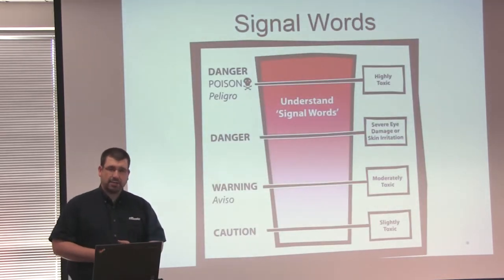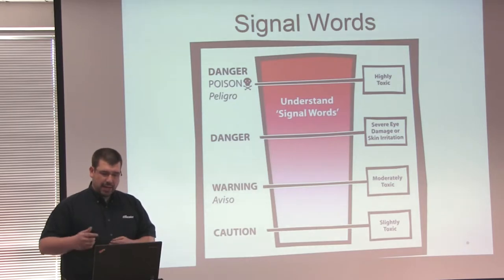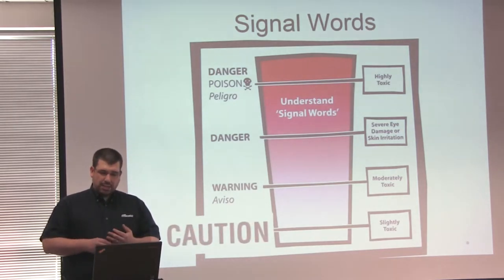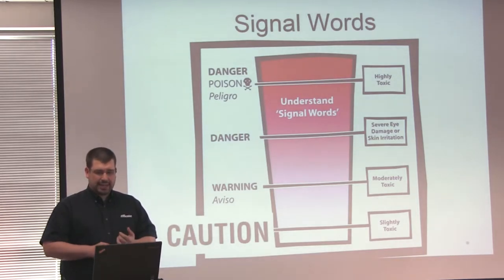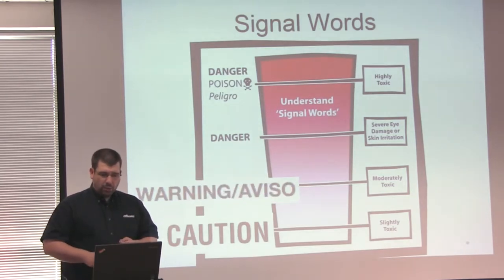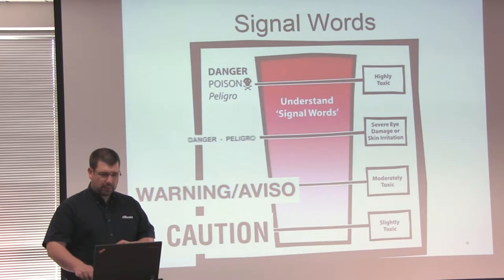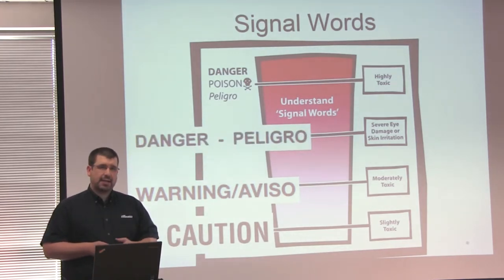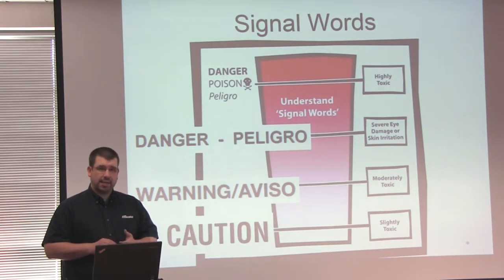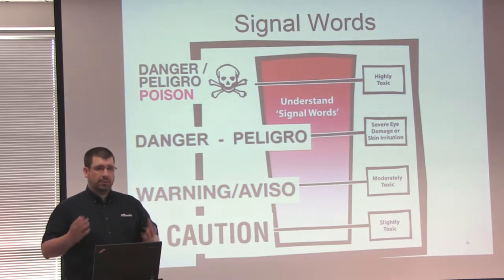Also on the front page of the pesticide are signal words. The signal word actually specifies how toxic the pesticide is to yourself. Caution is used when the pesticide is the least toxic or slightly toxic if inhaled, absorbed through the skin, or gets into your eyes. Warning is moderately toxic — it causes slight eye or skin irritation. Danger is used if it is highly toxic in one route of exposure. Routes of exposure include through the skin, through the eyes, inhaled, or ingested. Poison, in red letters, is added when the pesticide is highly toxic through all routes of exposure.